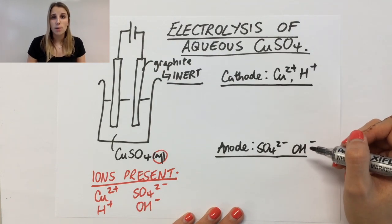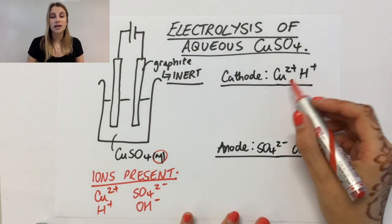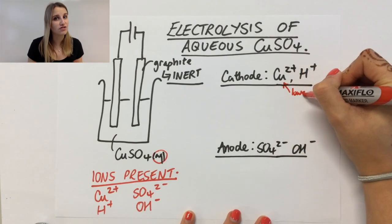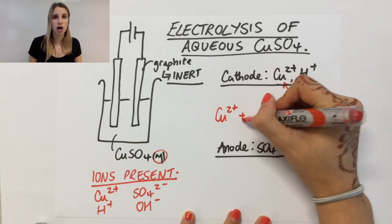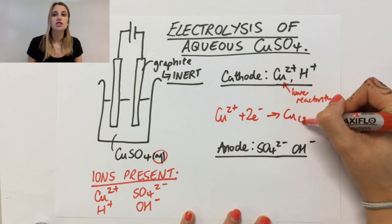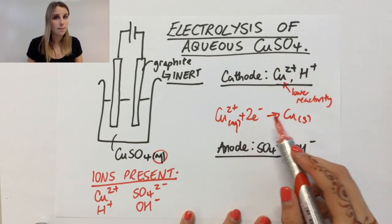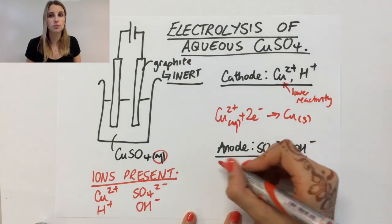At the cathode, between these two, the copper is lower reactivity than the hydrogen. So that means the copper will end up being discharged, will end up being reduced. You end up with Cu2+ picking up two electrons to become copper.